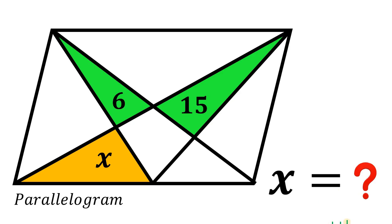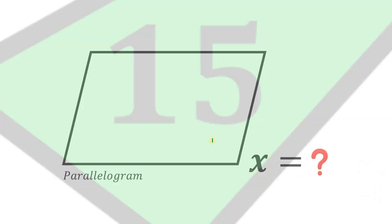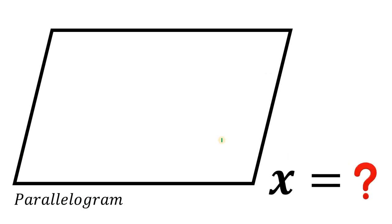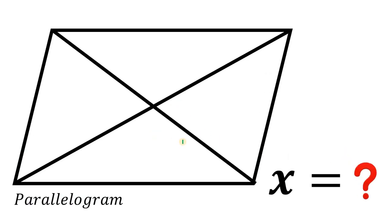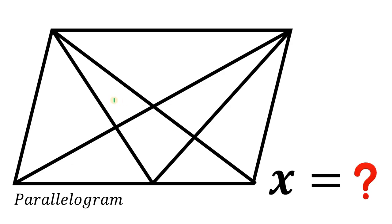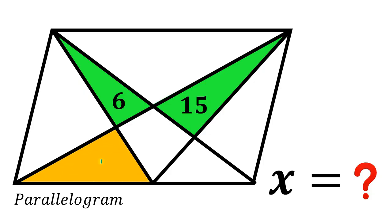Today we will answer a geometry challenge. First, let's have a parallelogram and draw some segments — two diagonals and two additional segments. The area of one region equals six square units and the area of another region is equivalent to 15 square units. The question is: what is the area of the triangle represented as x?